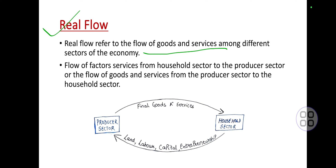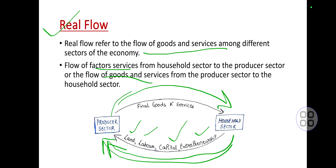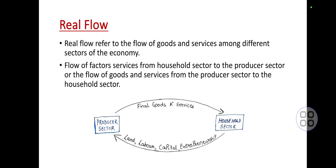Real flow refers to the flow of goods and services among different sectors of the economy — the flow of factor services from households to producers, and then the flow of goods and services from producers to the household sector. Households provide factor services to producers: land, labor, capital, and entrepreneurship.